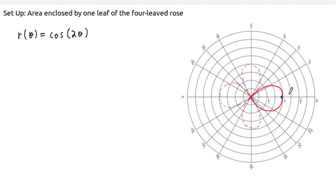First of all, this point here corresponds to θ = 0. And as θ increases, we get this portion of the curve. And this point right here corresponds to θ = π/4.